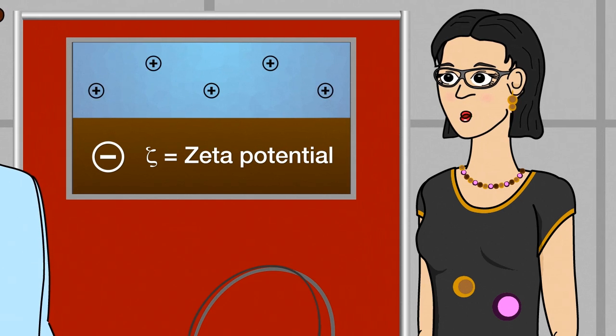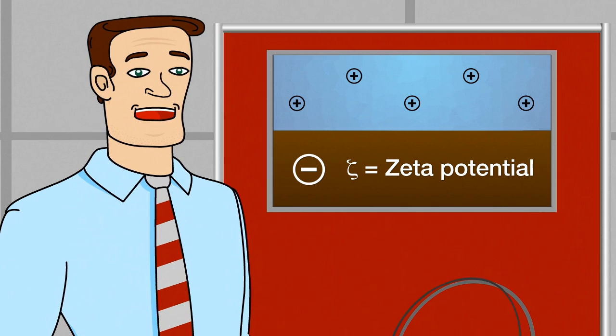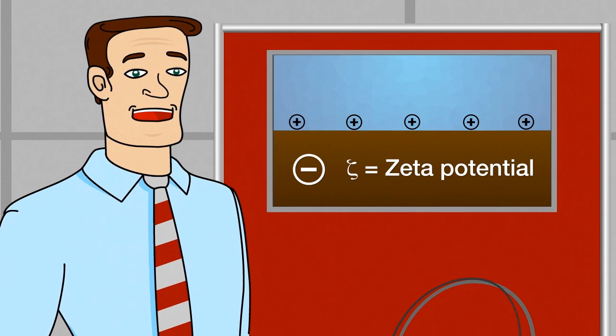Now imagine dissolved substances in the liquid, like salt in seawater. How will the surface interact with the positively charged ions of the salt? The surface's zeta potential is negative. So the surface will attract ions to a certain degree.